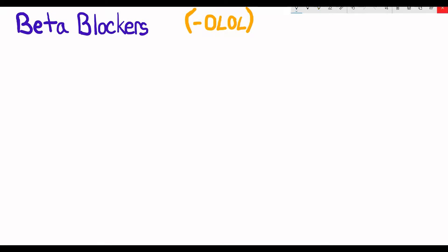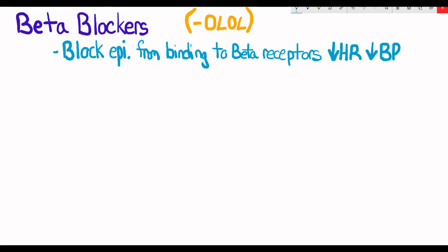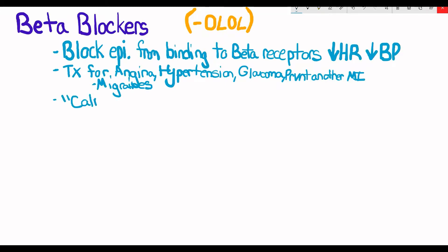Beta blockers include metoprolol and propranolol. They all have an O-L-O-L ending, so it's easy to remember. They block epinephrine from binding to beta receptors, which decreases heart rate and blood pressure. Beta blockers are used to treat a lot of other things besides angina, like hypertension, glaucoma, and prevent another MI. When you discharge from a hospital after having a heart attack, you will always be prescribed a beta blocker. They're also used to help treat migraines. They have a calm the brain effect, so you'll see people use them for public speaking or test taking if they come under pressure. That's an off-label use.